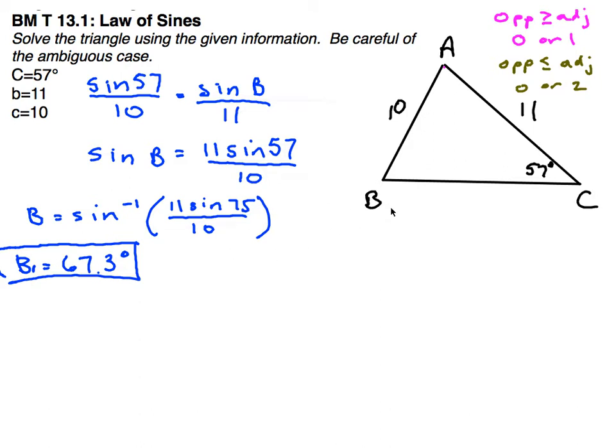I'm going to go ahead and find angle A now. Since I do know that angle A is going to equal 180 minus 57 and minus 67.3, and that comes out to 55.7. So angle A is 55.7.